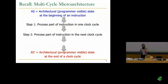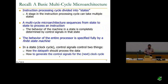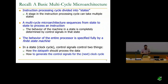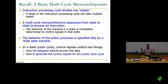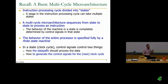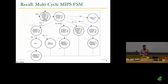This is our multi-cycle microarchitecture. Basically, we use multiple cycles to process an instruction. You divide the instruction processing into states, and a stage in the instruction processing cycle can take multiple states, sequencing from state to state to process pieces of an instruction. The behavior of the machine is completely determined by the control signals asserted within each state, and the behavior of the entire processor is fully specified by a state machine.